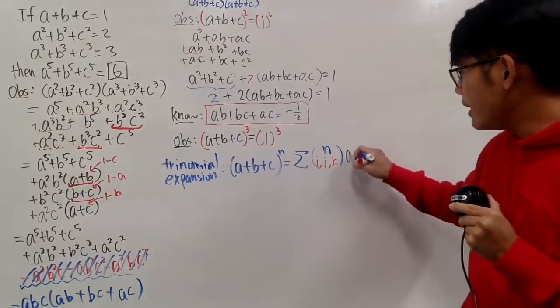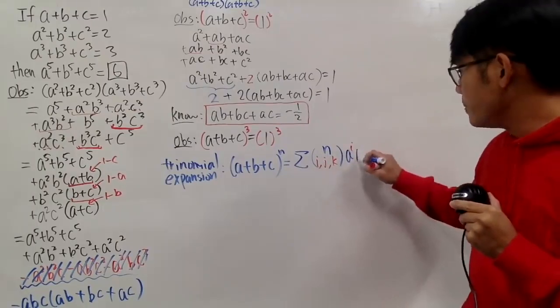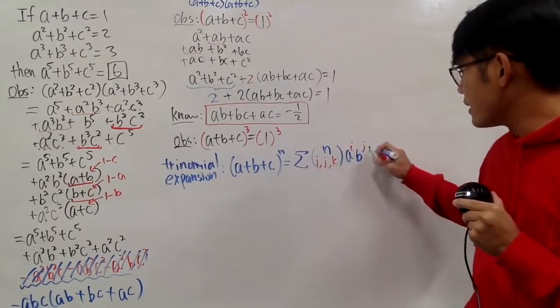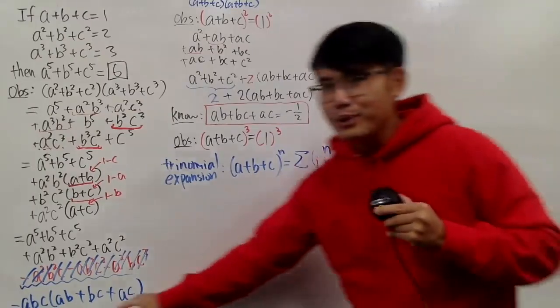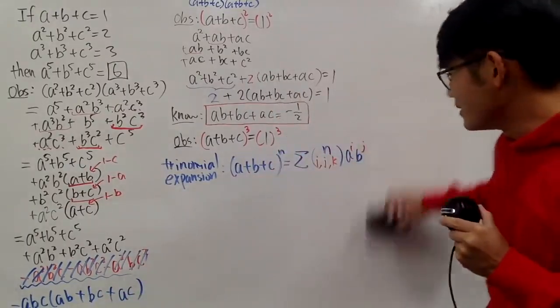And then you are going to have a to the i's power, b to the j's power, and c to the k's power. Like all this.